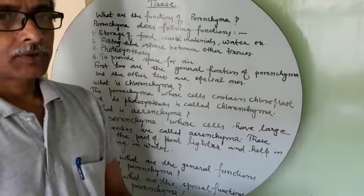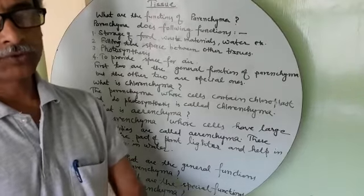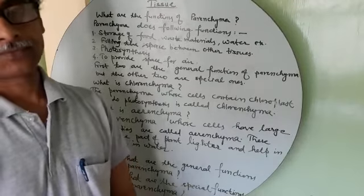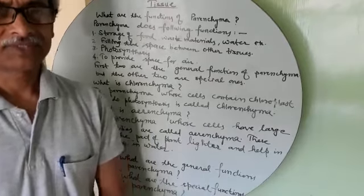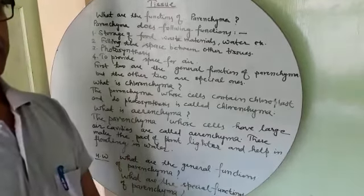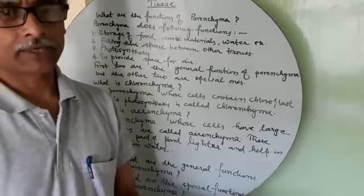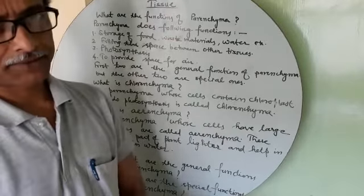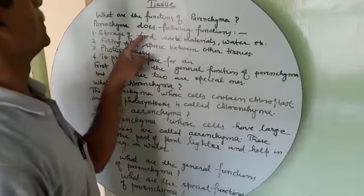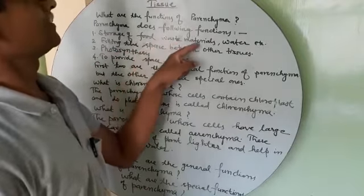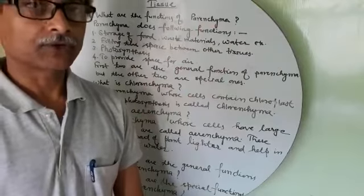Parenchyma stores food, water, waste materials, nutrients, and other things everywhere in the plant. So, storage of food, waste materials, water, etc. is one of its general functions.